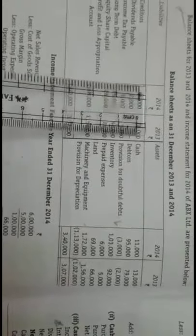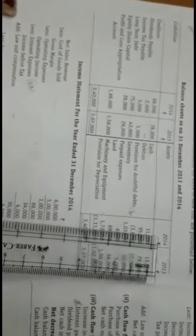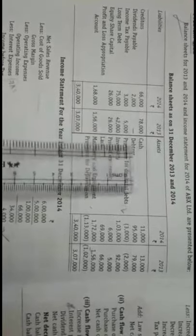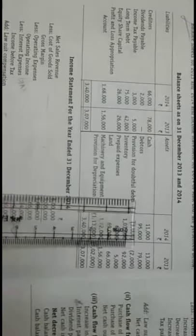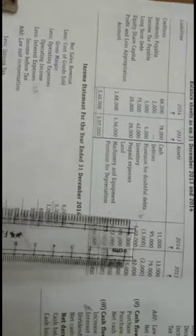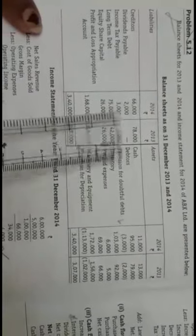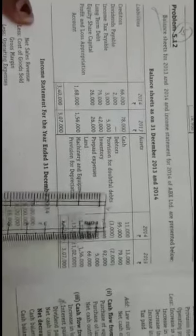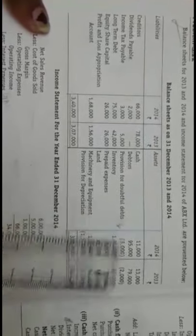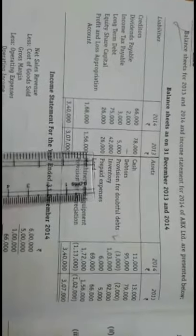Note the years given — current year and previous year. Debtors is a current asset; there has been an increase in debtors from Rs. 79,000 to Rs. 95,000, so there is an increase in current asset. Debtors, stock, and prepaid expenses — all three items have been added. Provision for doubtful debts should be treated as a current liability: previous year Rs. 2,000, current year Rs. 3,000 — increase in current liability of Rs. 1,000, shown here.